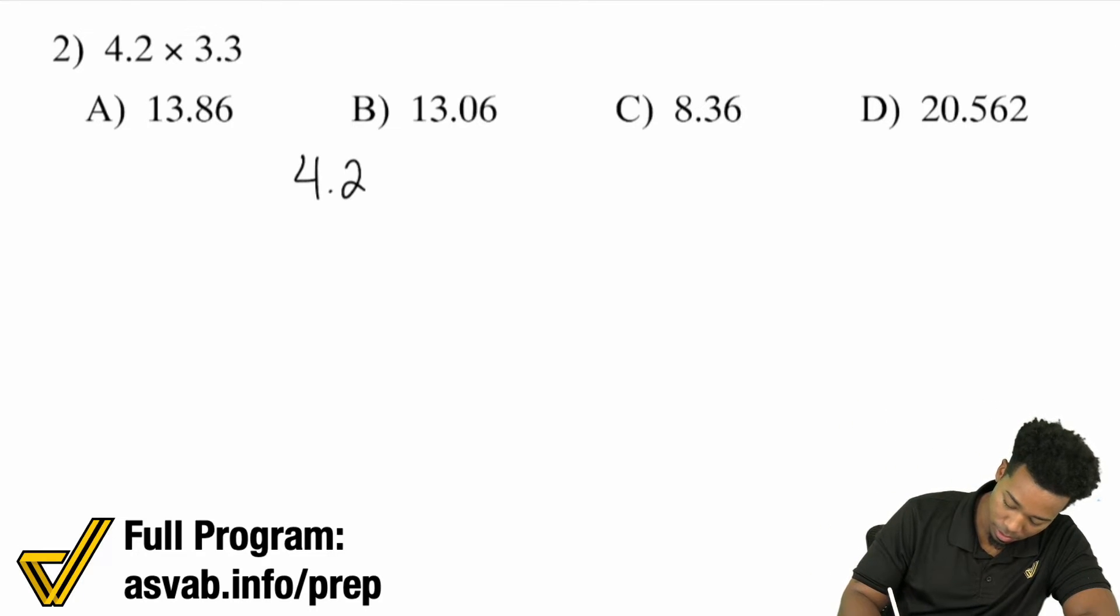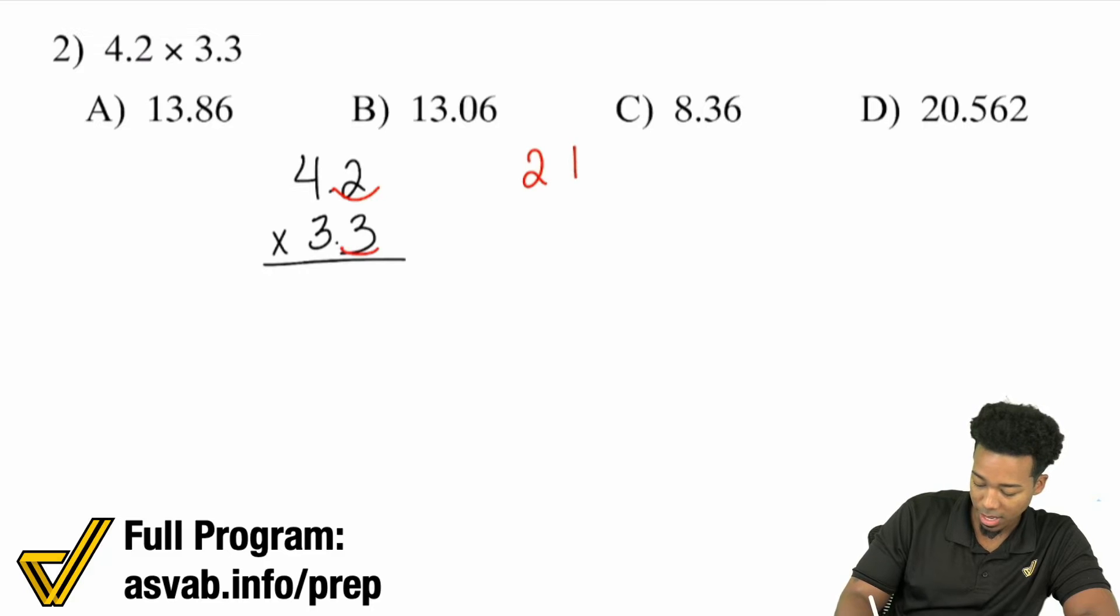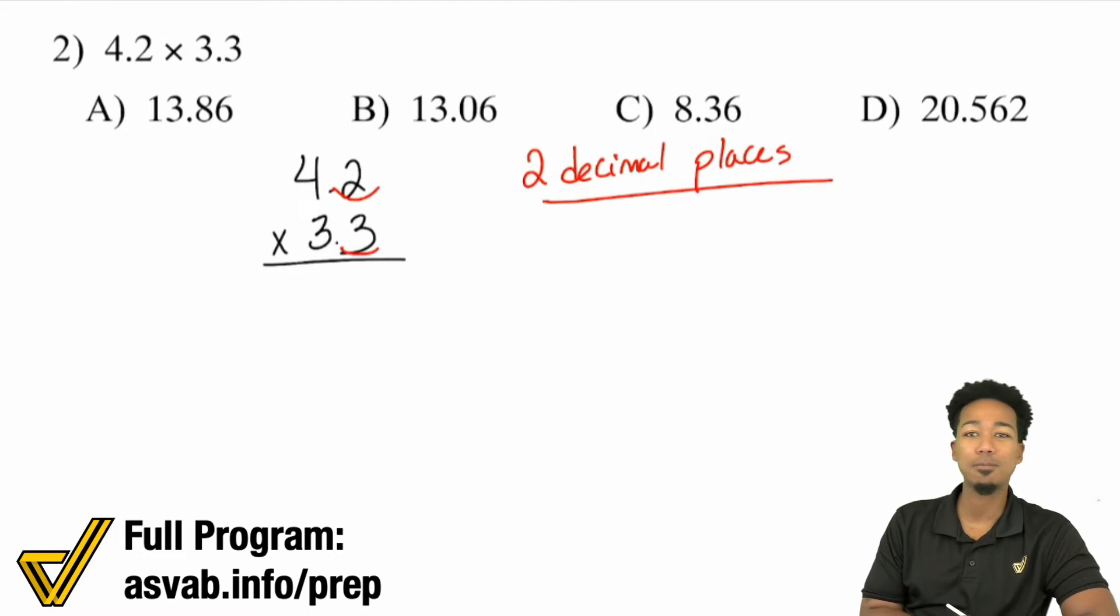Let's take number two. We've got 4.2 times 3.3. Again, just multiply it as normal. But at the end, understand that you have one, two decimal places to bring back. That's it. It's just like regular multiplication, except you just bring the decimals back at the end.